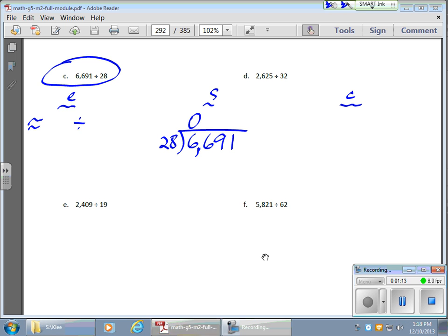We're going to begin our estimation. The 28, I'm going to round to 30. That's my divisor. My 66 or my 6,600s. And I'm going to round that to an even 60, but it's 60 hundreds. Okay. There is no 66 in that number. It's 66 hundreds. And when we divide, we wind up with 200s.